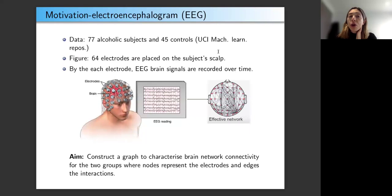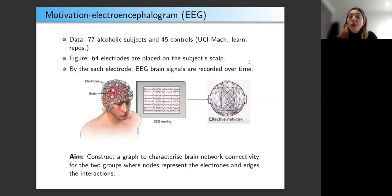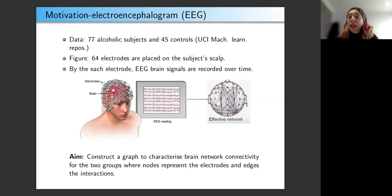This work is motivated by an electroencephalogram dataset. We have 77 alcoholic subjects and 45 controls. As shown in the picture, 64 electrodes are placed on the subject's scalp, and EEG brain signals are recorded over a period of time by each electrode. For each subject, a vector of 64 brain signals is observed over time, which can be regarded as multivariate functional data. Our goal is to construct a functional graphical model to characterize brain network connectivity, where nodes correspond to electrodes and edges indicate associations among them.